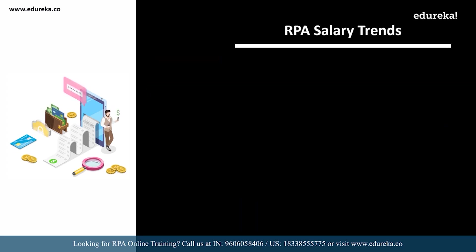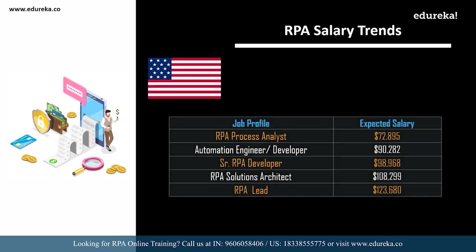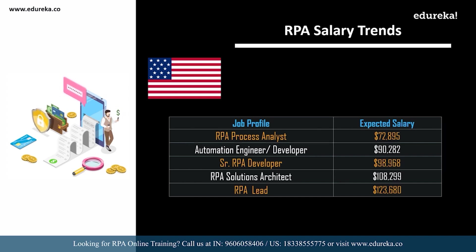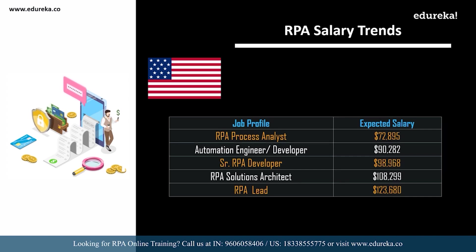For the same roles in the USA: an RPA developer averages around ninety-two thousand dollars. An RPA process analyst can expect around seventy-two thousand dollars; an automation engineer or developer around ninety thousand dollars; a senior RPA developer around ninety-eight thousand dollars; an RPA solutions architect around one hundred thousand dollars; and an RPA lead around one hundred and twenty-three thousand dollars. It's a huge amount of money for any career role, so this is the right time to start your career in RPA.